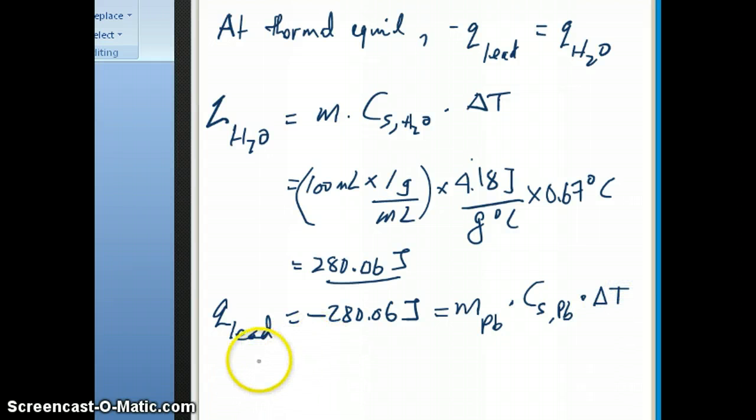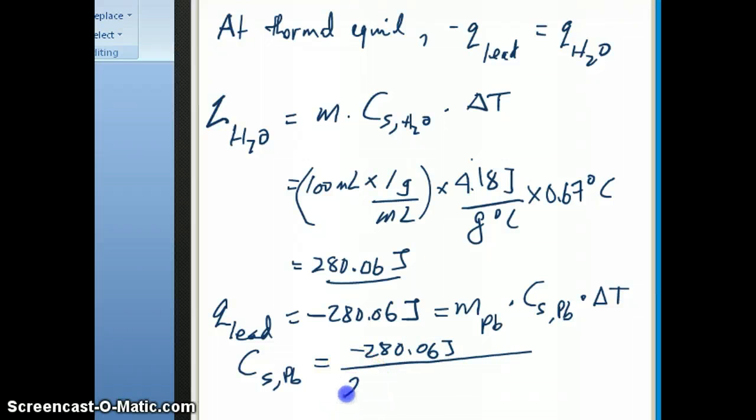And then we can then solve, because we're being asked for this. We can solve for that by taking negative 280.06 joules divided by the mass of the lead, which is 26.47 grams. And then divide this by the temperature change. Now, if you think about temperature change, the final temperature of the water and the lead in the coffee cup calorimeter is the same, which is 23.17 degrees Celsius. The starting temperature for the lead is 89.98 degrees Celsius.